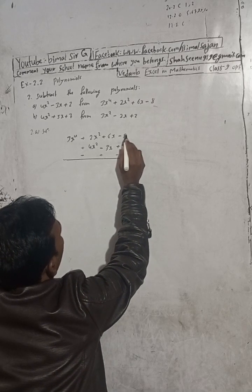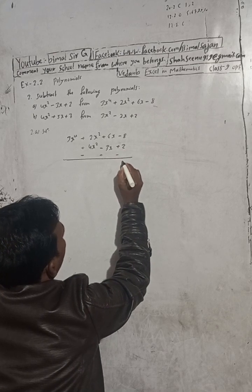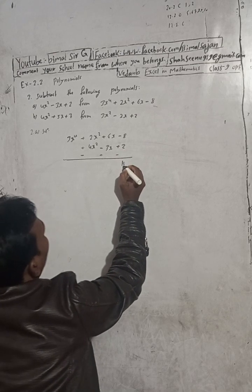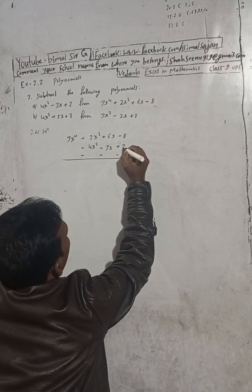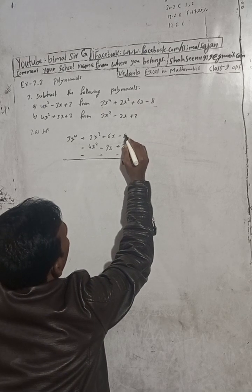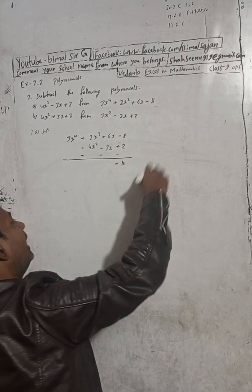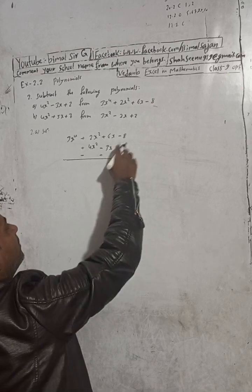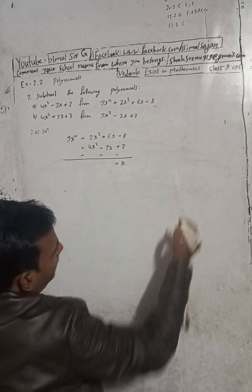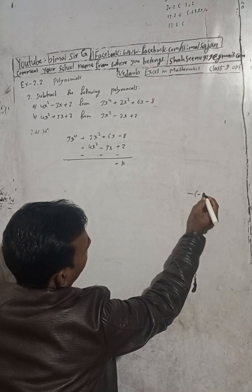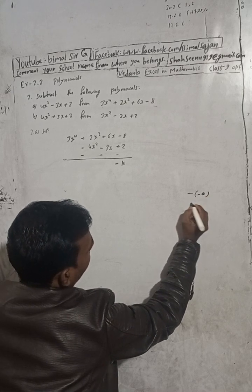Now, the sign changes: minus minus gives plus, and minus plus gives minus. We draw the sign change line. Minus minus minus — that becomes plus. Follow the sign change rule carefully here.